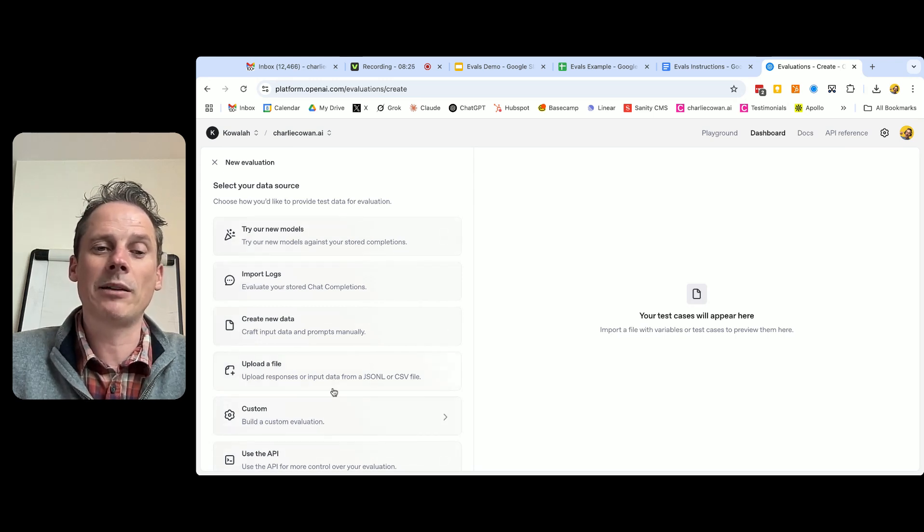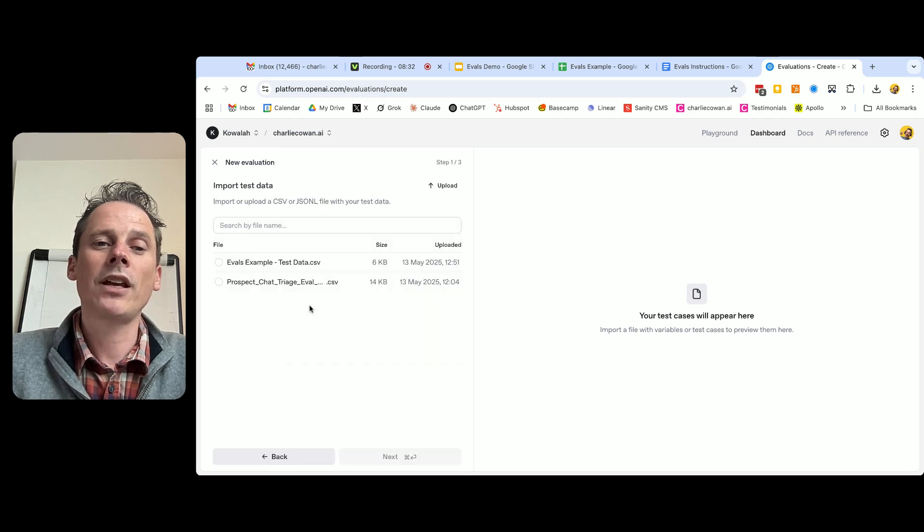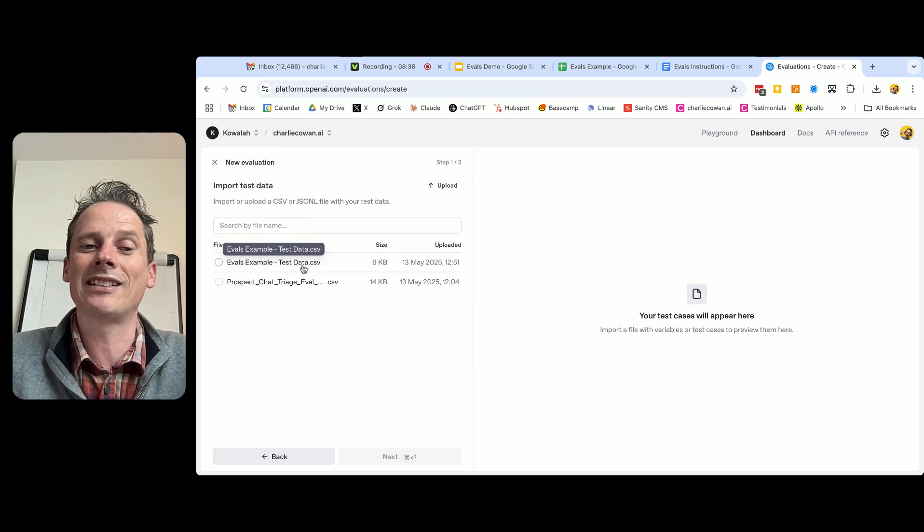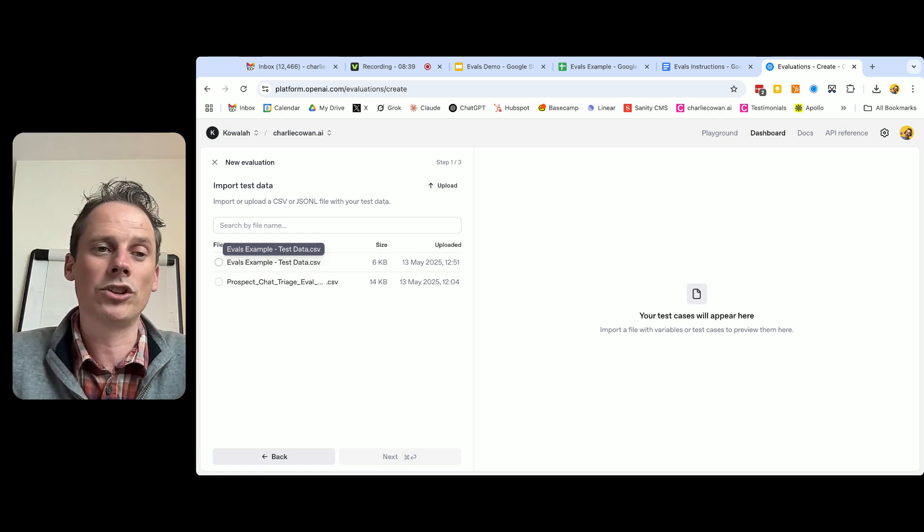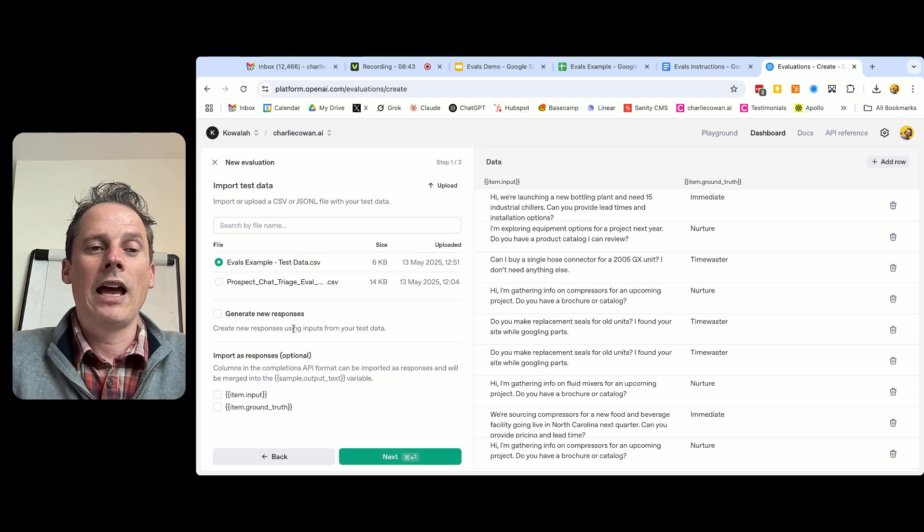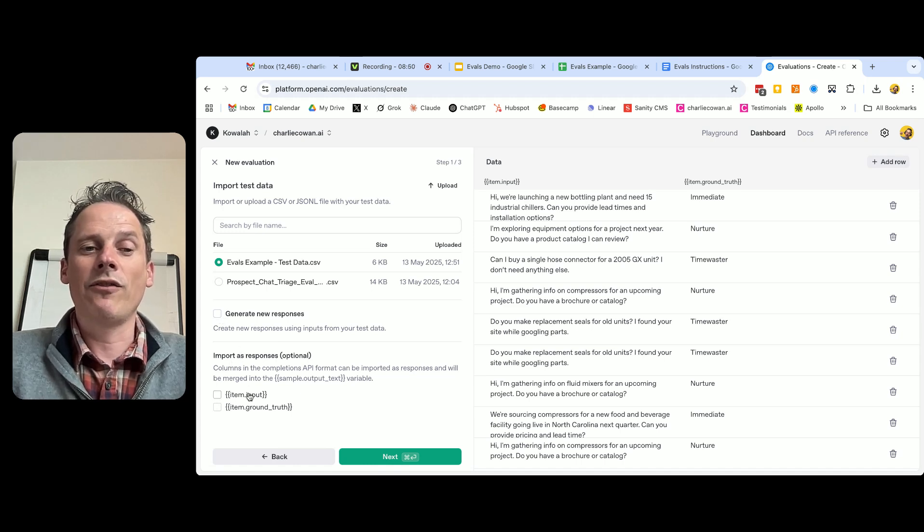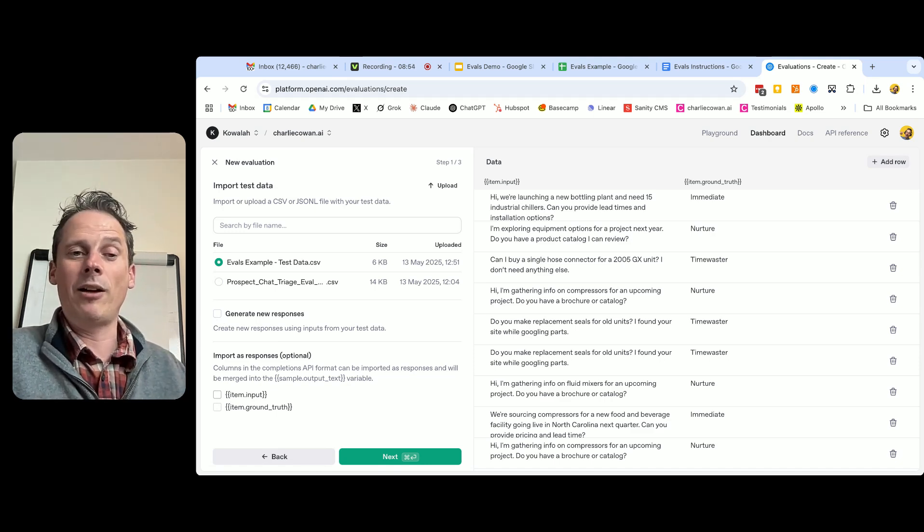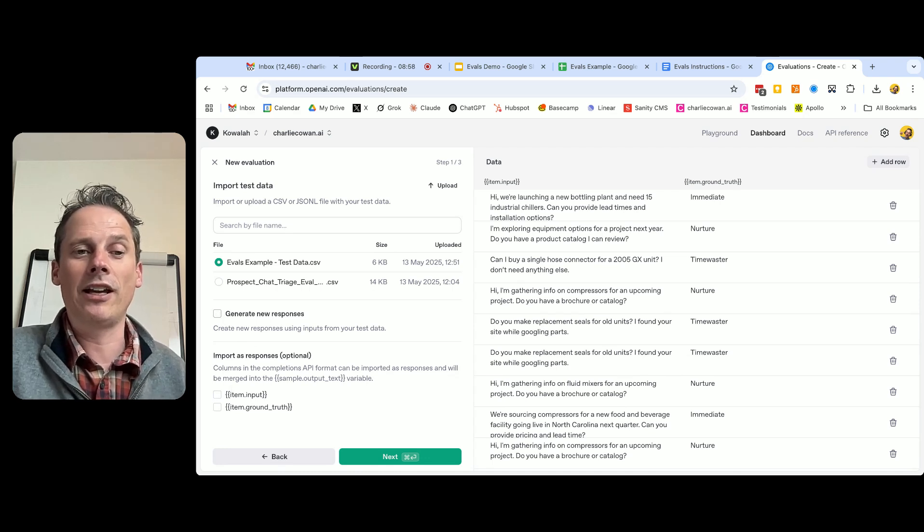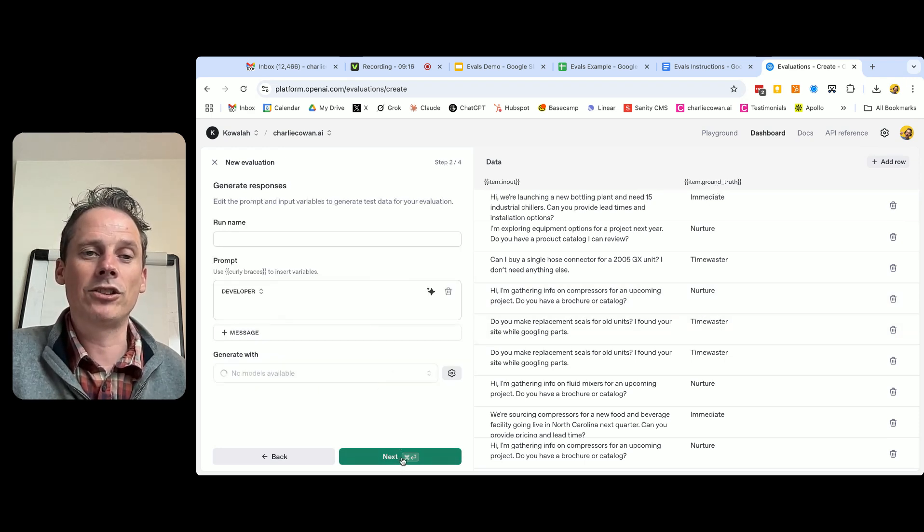There's different ways that you can start this, but because we've created our test data file, then I'm just going to click upload a file. Now I've already uploaded it here. It says evals example test data. You can upload yours once you've got it. So I'm going to click that evals example. And then I've got a box here: generate new responses or import as responses. So if you've already got responses from your AI model, then you could add it in here. But we're going to ask OpenAI to generate new responses for each of our 50 test data examples. So we've got item input came from our spreadsheet, item ground truth also came from our spreadsheet, and we're going to generate new responses. So let me go on to next now.